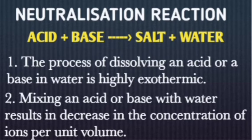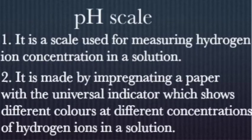The range we call pH measures how much H+ is present — more H+ means more acidic; more OH- means more basic. pH is a scale used for measuring hydrogen ion concentration in a solution. The 'p' in pH comes from the German word meaning 'power' — it indicates hydrogen power. It tells us whether a given solution is acidic, basic, or neutral.